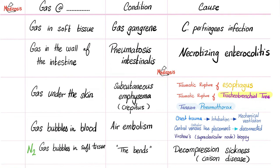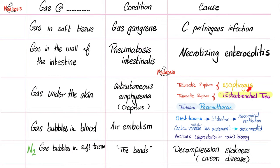When you have gas in your soft tissue, this is gas gangrene caused by Clostridium perfringens infection, among others. When there is gas in the wall of the intestine — a condition known as pneumatosis intestinalis — this is caused by necrotizing enterocolitis, or NEC, a horrible condition in pediatrics, especially when the newborn is born prematurely. Gas under the skin felt on physical exam is the classic sign of crepitus, or subcutaneous emphysema — could be caused by traumatic rupture of the esophagus, traumatic rupture of the tracheobronchial tree, or tension pneumothorax. These are emergency conditions.